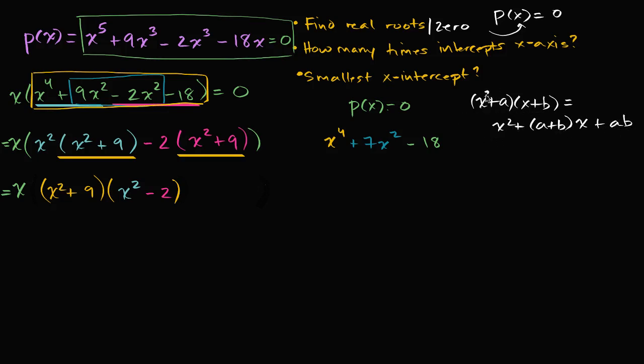But if this was x squared plus a times x squared plus b, then instead of this being x squared, this would be x to the fourth. And instead of this being x, this would be x squared, which is exactly the pattern we have here.